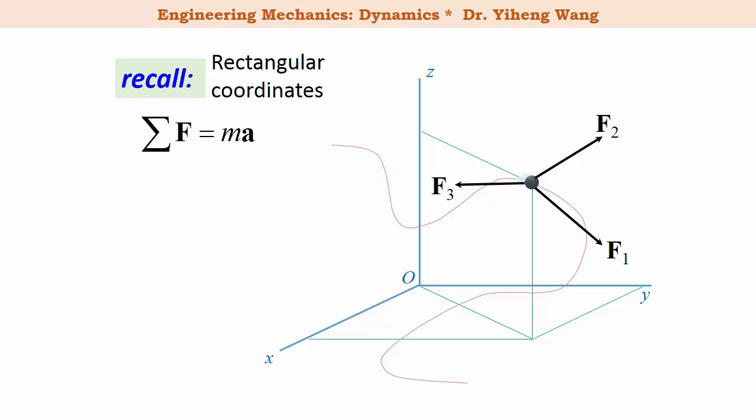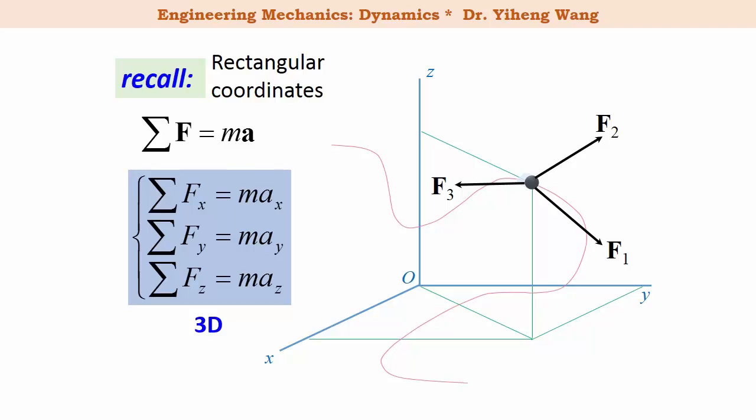If you recall, for particle kinetics, the equation of motion is simply Newton's second law: the resultant force acting on the particle equals its mass times the acceleration vector. The acceleration vector has the same direction as the resultant force. When studied in a 3D rectangular coordinate system, this vector equation becomes three scalar equations — the resultant force along the x, y, or z direction equals the mass times the acceleration along that respective direction.